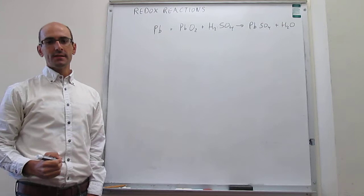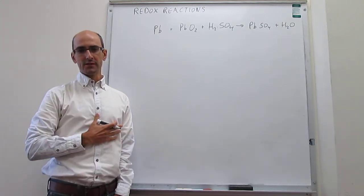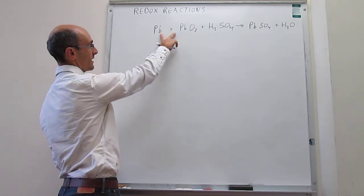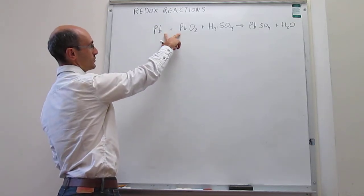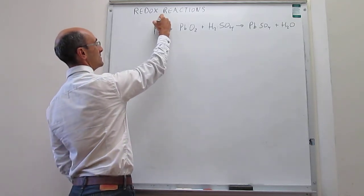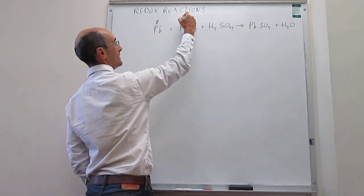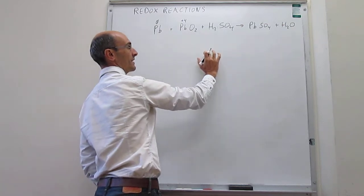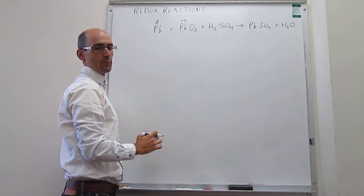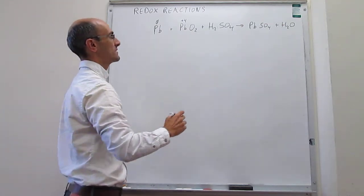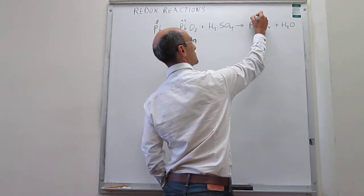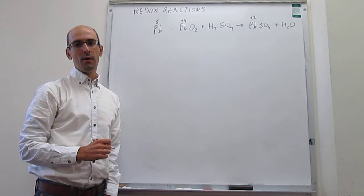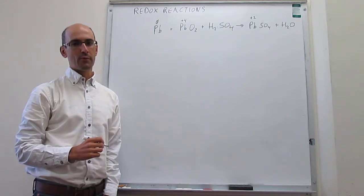This redox reaction is interesting because in the reagents we have the same element in two different oxidation states — that is zero and plus 4. These two elements generate a unique product with a different oxidation state, which is plus 2. That type of reaction is called comproportionation.